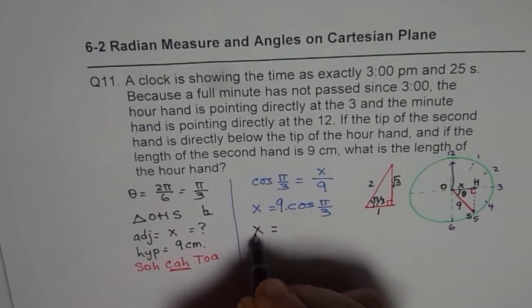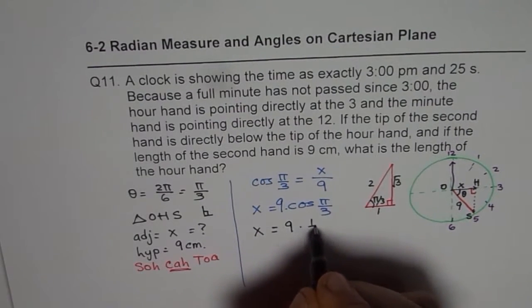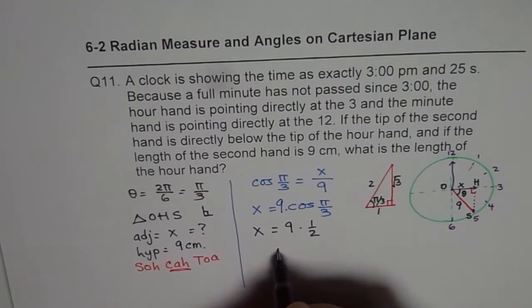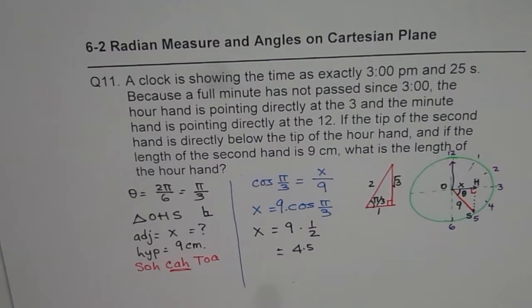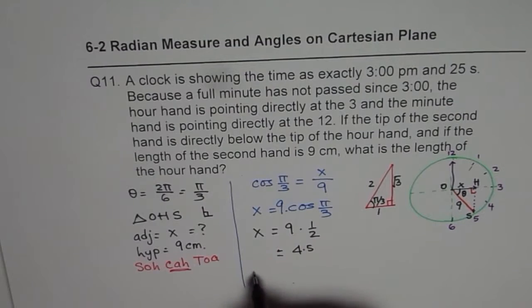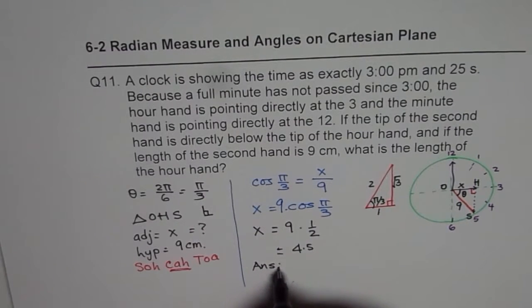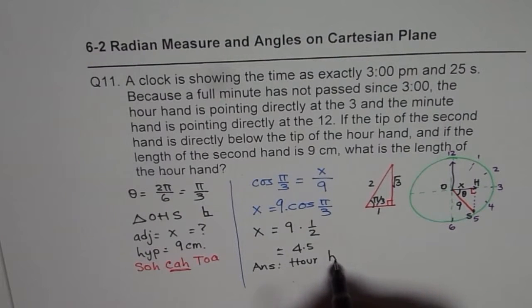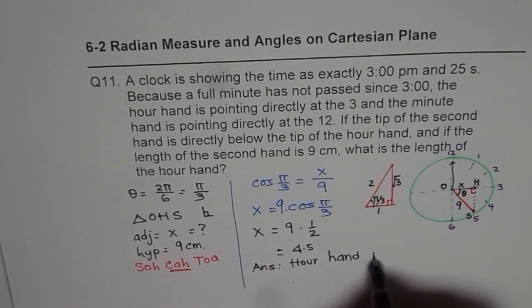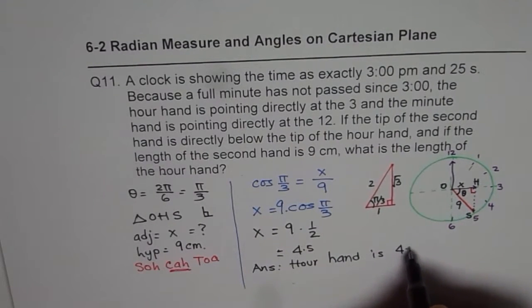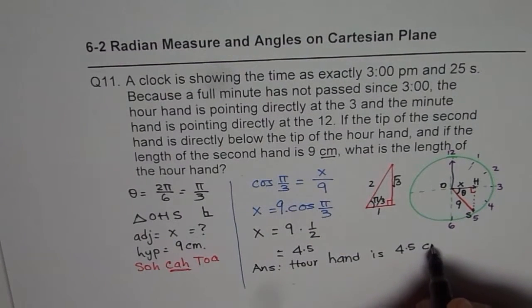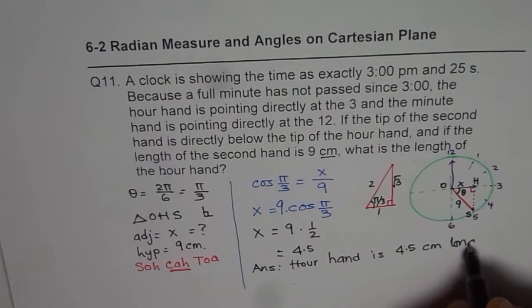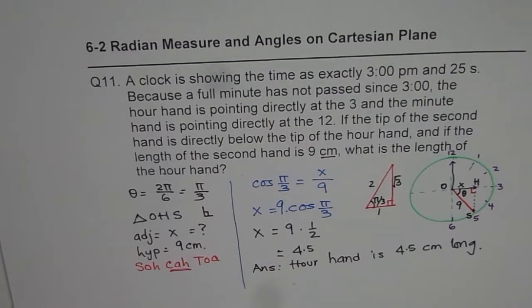So you can write this as x equals 9 times half, which is 4.5. So now you can write down that the answer which is our hand is 4.5 centimeters long. That is how you can solve this question. I hope it helps.